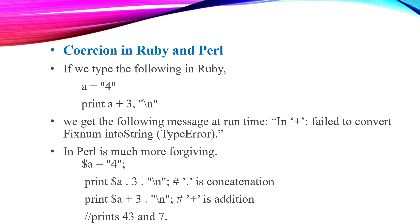In the Perl scripting language, the type of variables is declared differently. For example: $a equals 4. With $a dot 3, the dot means concatenation, and the result is 43. With $a plus 3, that is addition, and the result is 7.